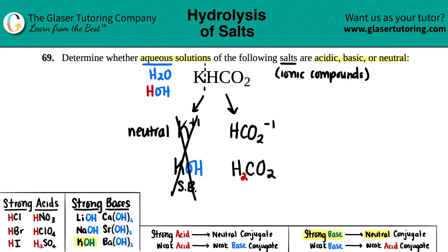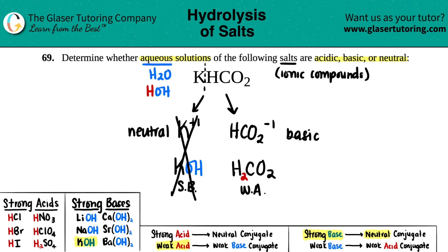For H₂CO₂: is it one of the strong acids? I scan the list — I don't see it, so it's not a strong acid. All other acids are considered weak, so this is a weak acid. Weak acids form weakly basic conjugates. The conjugate here is basic. Now we just add up what we have: neutral plus basic equals basic.